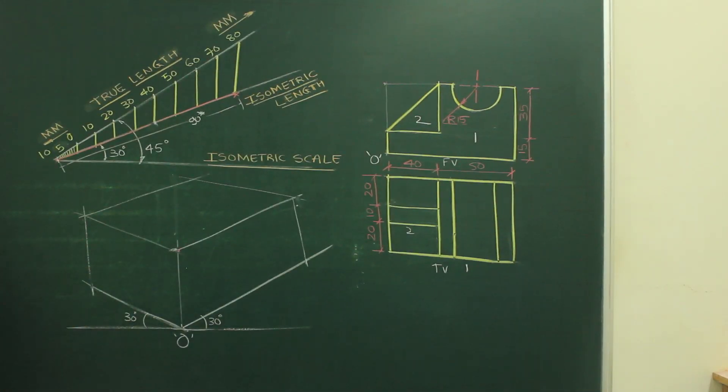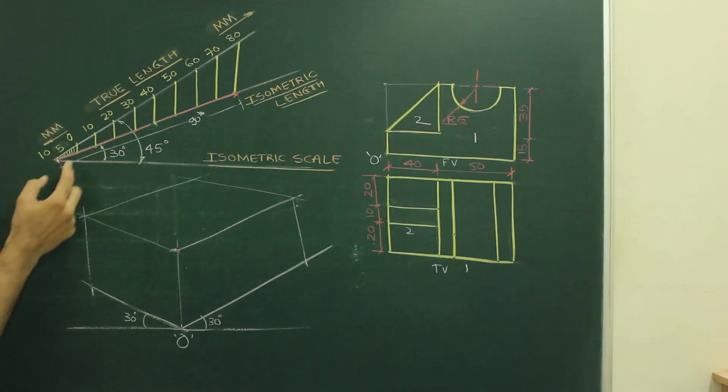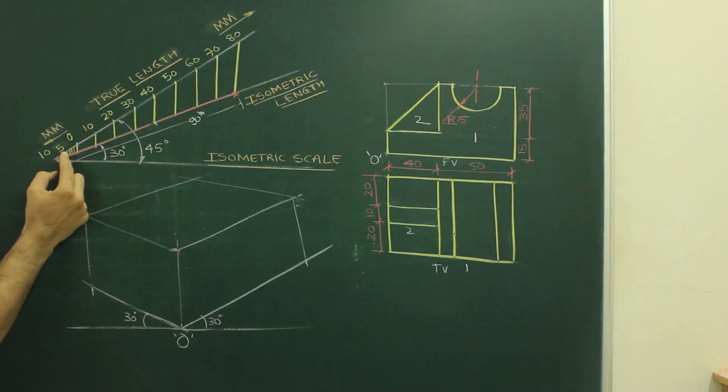Why I am saying star? Because those are not original length. Those are isometric length. Now, to take 15, I will take 10 from here and 5 from here. So I need to be careful by taking the dimension. I will take 15 here. I will take 10 from here and 5 from here. And I will take it from this isometric length. And I will mark on this length.